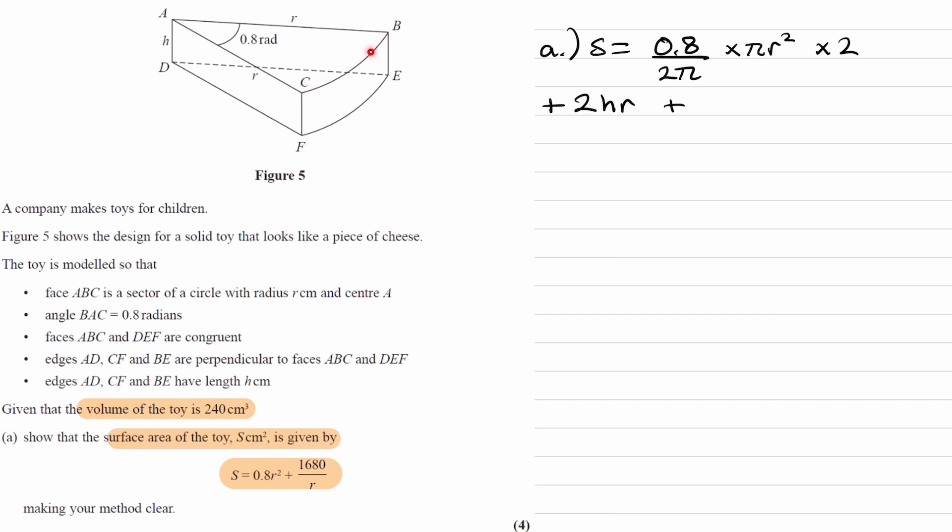This length here is the arc length of this sector. To work out that arc length, we do, again, the fraction of the circle that we have, 0.8 over 2π, multiplied by the circumference. So that now gives us the arc length times that by the height h, and we get the area.